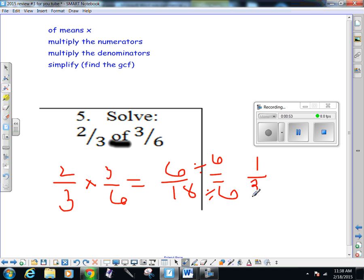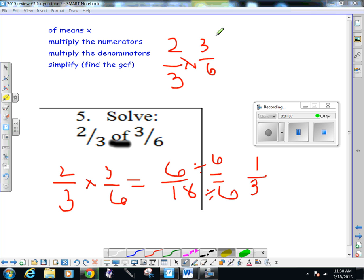Now I could have saved myself some work had I, when I originally began the problem, looked at my means and extremes. If I look at 3 and 3, the greatest common factor of 3 and 3 is 3. So 3 divided by 3 is 1, 3 divided by 3 is 1.